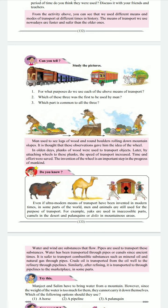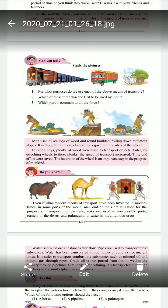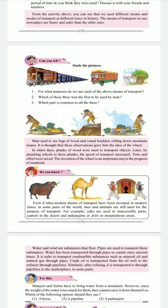Which of these three was the first to be used by man? Which part is common in all these three? Man used to see blocks of wooden round boulders rolling down mountain slopes. It is thought that these observations gave them the idea of the wheel. In olden days, planks of wood were used to transport objects. Later, by attaching wheels to these planks, the speed of transport increased — time and effort were saved. The invention of the wheel is an important step in the progress of mankind.